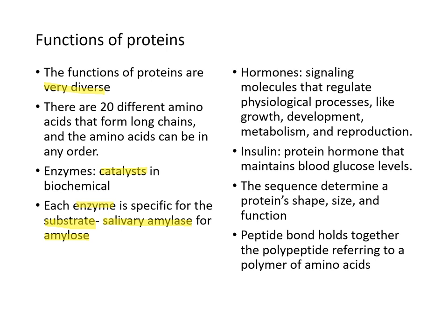Some proteins function as hormones — signaling molecules that regulate physiological processes like growth, development, metabolism, and reproduction. Insulin is a classic example of a protein hormone that regulates blood glucose levels. It is the sequence of amino acids that determines a protein's shape, size, and function. The peptide bond is the special bond that holds amino acids together into a polypeptide.